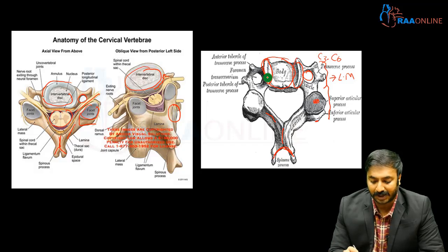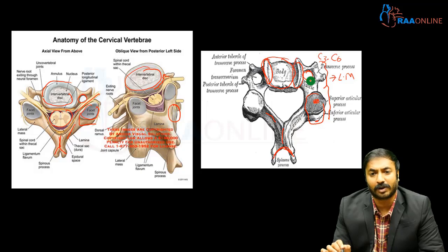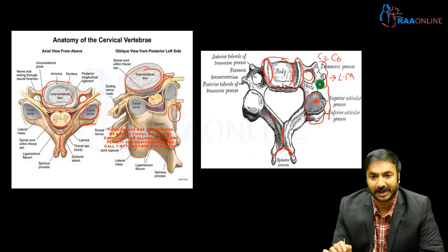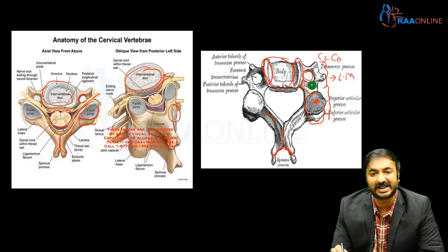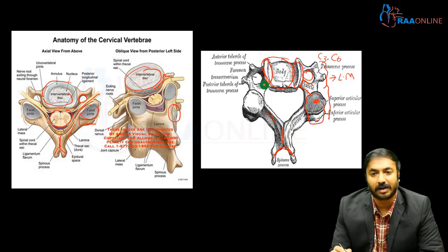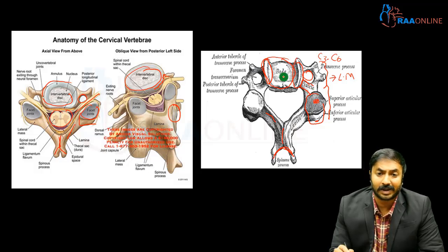The entire structure including the superior facet, inferior facet, and foramen transversarium is collectively called the lateral mass, which is commonly used for placing stabilization screws. Posterior to the foramen transversarium is the pedicle. When lateral mass screws cannot be placed, pedicle screws can be used instead for instrumentation.